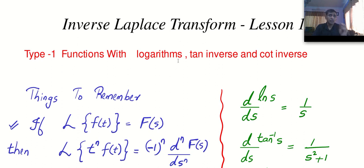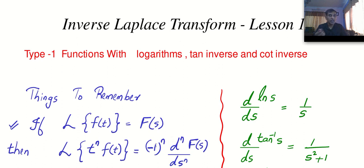A few things to remember. The first thing is we need some properties from Laplace transform. Do you remember this property? If Laplace of a function is f of s, then how do you find the Laplace of any function multiplied by t? Very simple — we keep on differentiating again and again and multiply by minus depending on the power of the polynomial, and you need a few more things because we are going to differentiate.